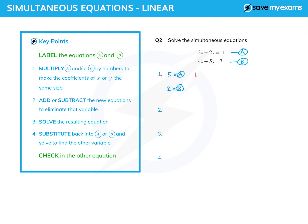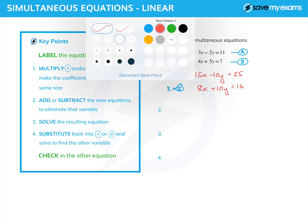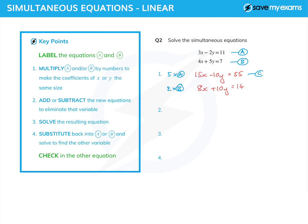So here we go. 5 times equation A, I get 15x minus 10y equals 55. And if I do 2 times equation B, I get 8x plus 10y equals 14. And I'm going to give these new equations new names. So C and D, very imaginatively.